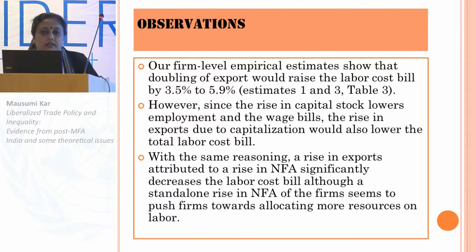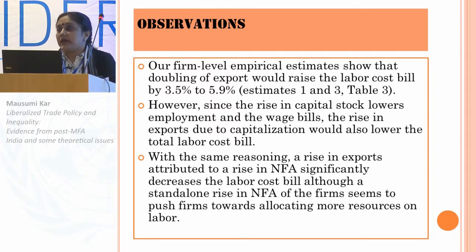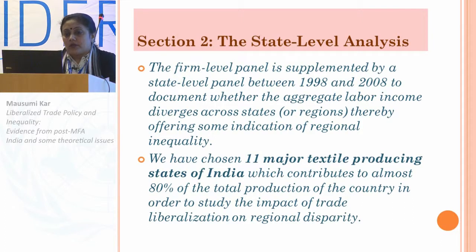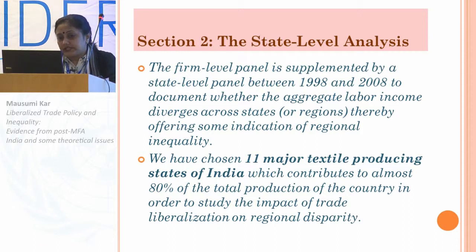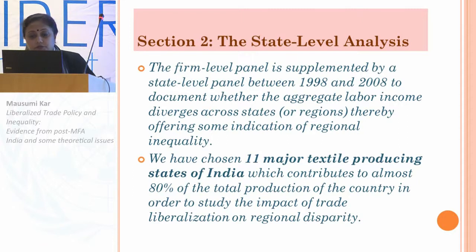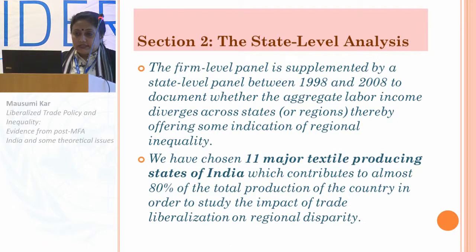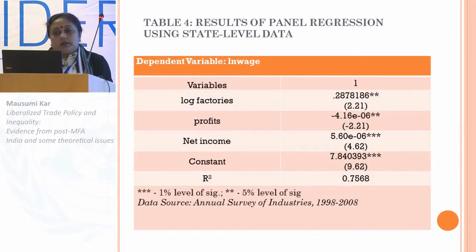The second part of our study is a state-level analysis where the firm-level panel is supplemented by a state-level panel between 1998 and 2008, to document whether aggregate labor income varies or diverges across states, which offers some indication of regional inequality. For this, we chose 11 major textile-producing states of India that contribute 80% of total production. The results of the panel regression are shown in Table 4, which shows that the aggregate state-level wage bill falls as the profit level rises.